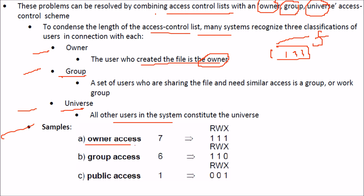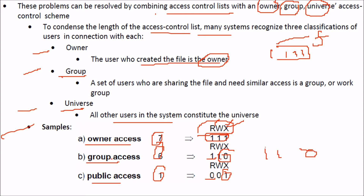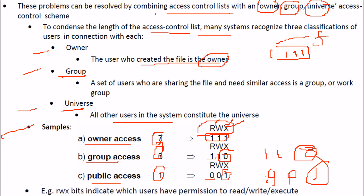For example, owner access can be 7, group access can be 6, and public access can be 1. Owner access allows read, write, and execute. Group access allows read and write but not execute. For public access, only execute is allowed. Alternatively, group access could be 1,1,0 meaning read and write are not possible but execute is allowed. These are sample scenarios. The rwx notation indicates which users have permission to read, write, and execute.